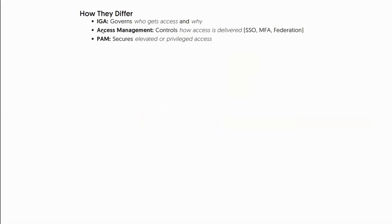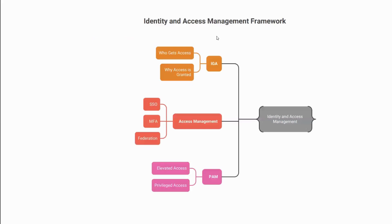Let's recap how the three domains differ. IGA governs who gets access and why. Access Management controls how access is delivered. PAM ensures specific accounts are securely elevated and privileged access is granted and monitored. IGA and Access Management deal with almost all types of accounts, while PAM is primarily focused on privileged accounts. Together they comprise the Identity and Access Management framework — IGA handles who gets access and why, Access Management provides SSO, MFA, and federation, and PAM provides elevated and privileged access.